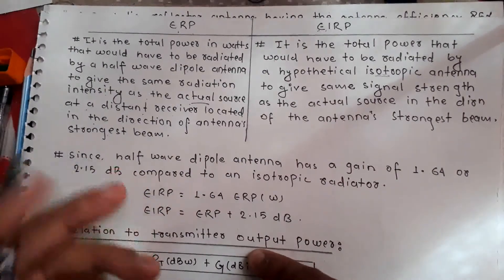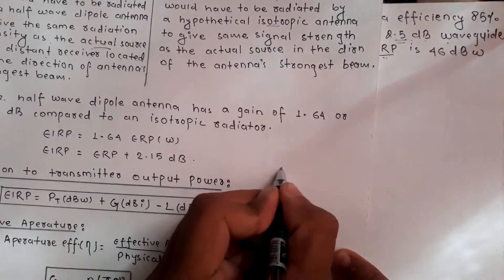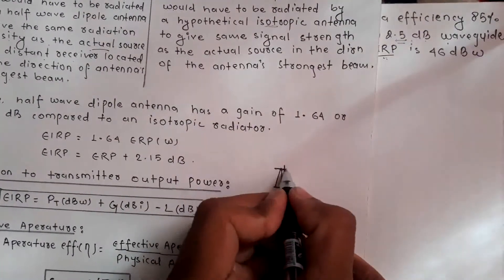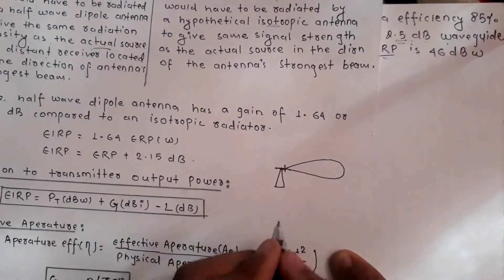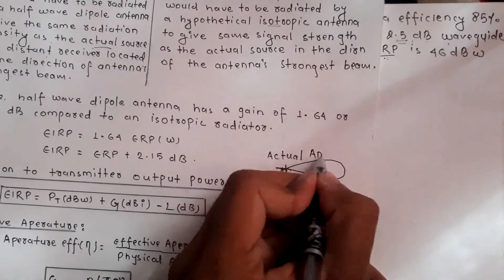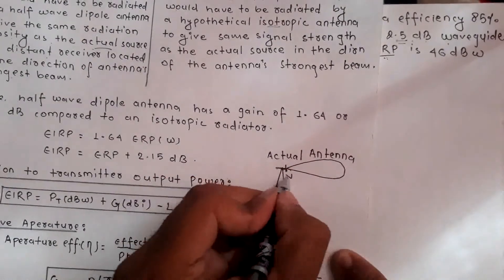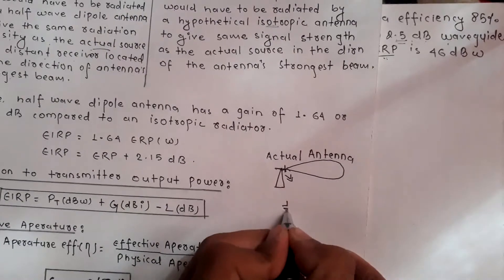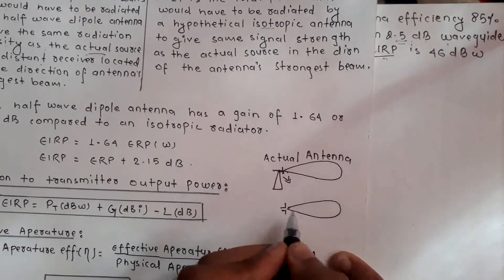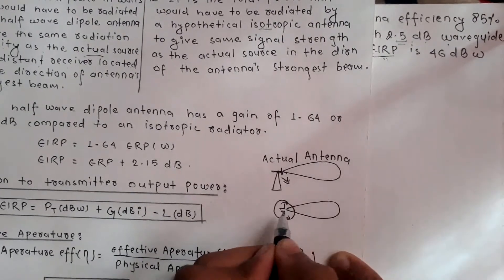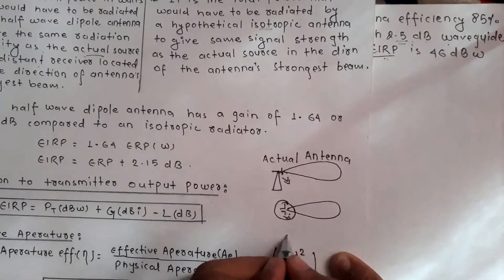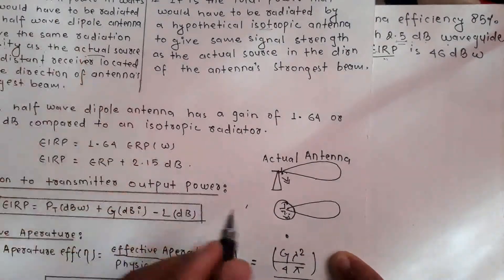Suppose we have a real antenna and the direction of the strong beam is towards a certain direction. If I replace this actual antenna with a dipole antenna and wish to generate the same radiation pattern, I need a certain power to run the dipole antenna — this power is the effective radiated power (ERP).